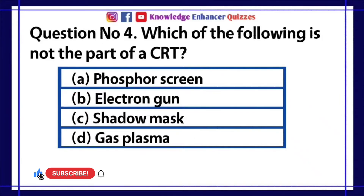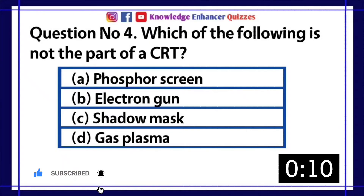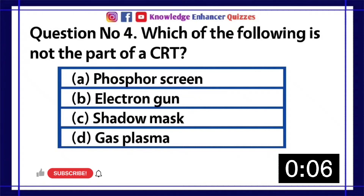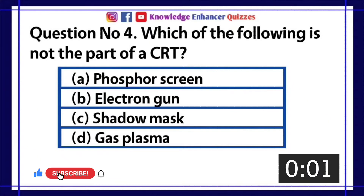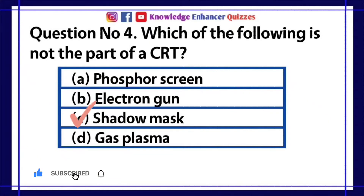Question number 4. Which of the following is not the part of a CRT? A. Phosphor Screen. B. Electron Gun. C. Shadow Mask. D. Gas Plasma. Option C is the right answer.